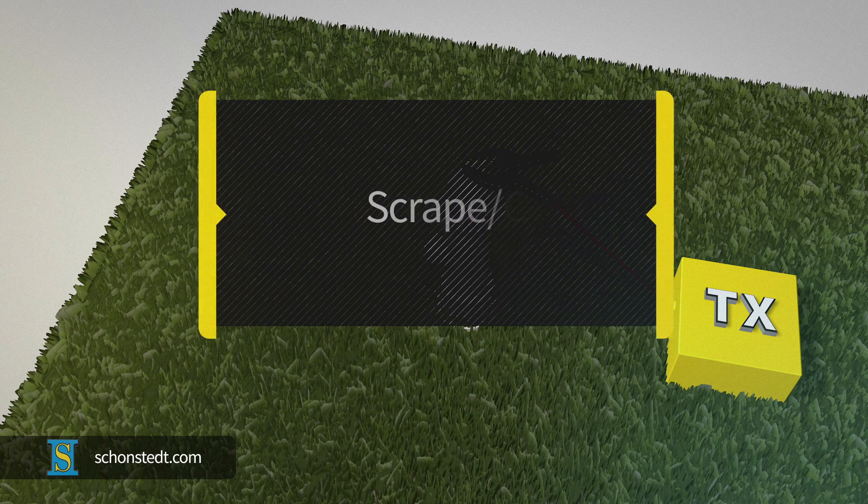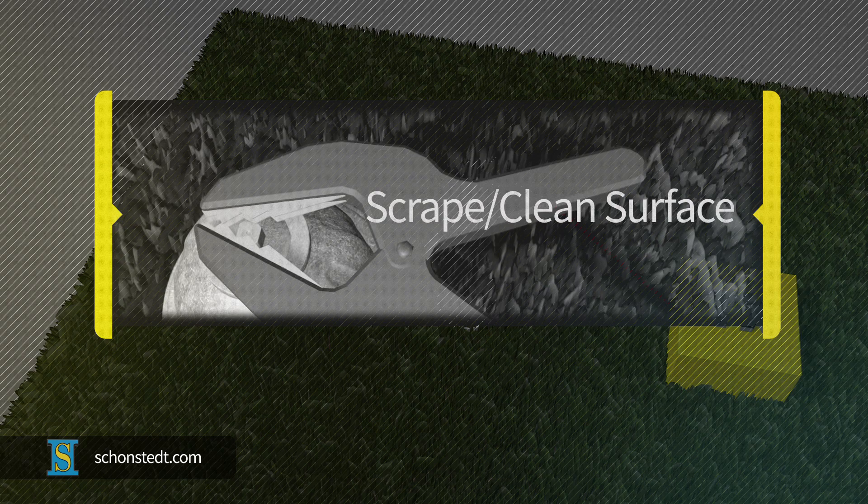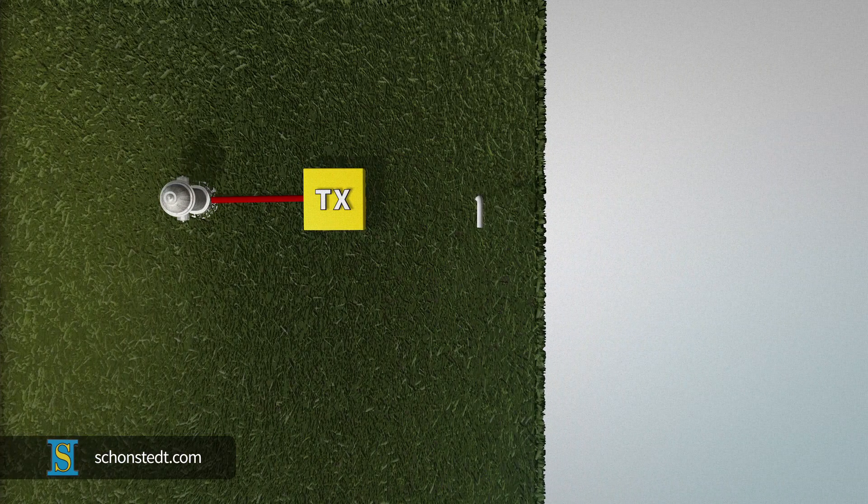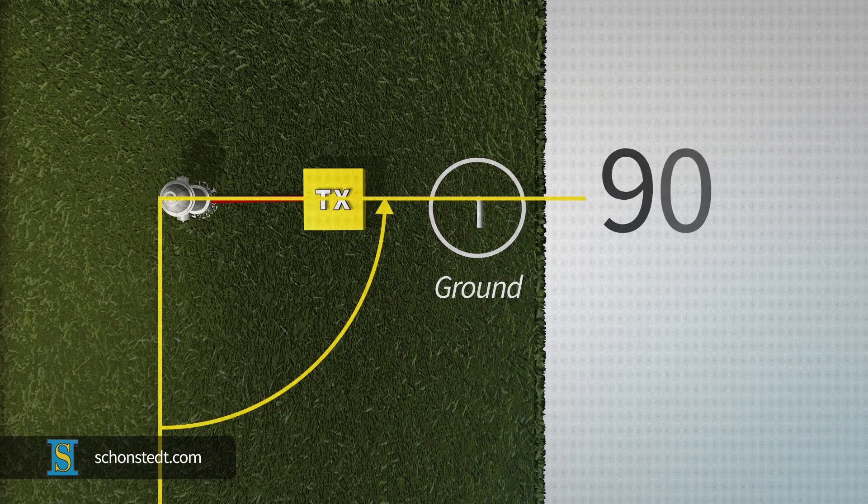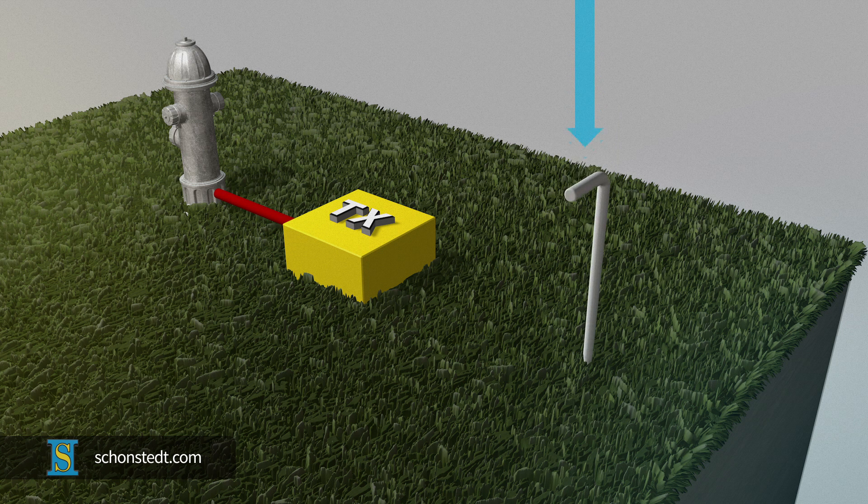For best results, you may need to scrape or clean the surface at the point of contact. Next, position a ground stake as close to 90 degrees as possible to the anticipated line location path. Press the stake deep into the ground to increase surface contact with the soil.